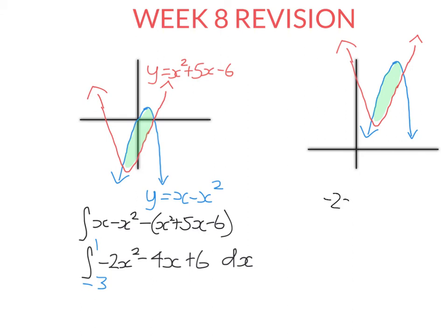So this gives us -2x³/3. Remember, we increase the power by one and then divide by the new power. Then it'll be -2x². And remember, integral of 6 isn't zero. It doesn't vanish. It's 6x. We don't need to add the c for definite integrals. We're just going to evaluate between -3 and 1.